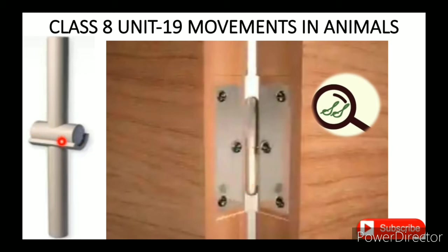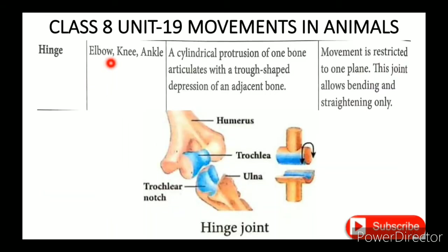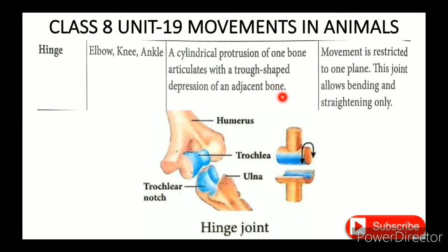An example of a hinge joint is the ankle. The protrusion of one bone is articulated with a trough-shaped depression of an adjacent bone. Movement is restricted to one plane.